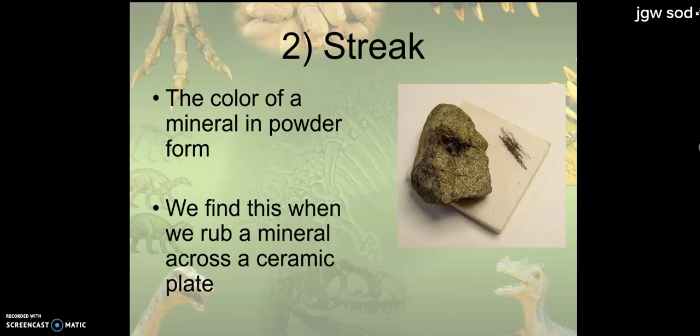Streak. You'll notice here we have a ceramic plate. If you take one, for example, this gold colored mineral, and I run a streak across it, it provides a black-green streak. Notice the streak is different than the color of the mineral. More evidence to figure out what that mineral is.